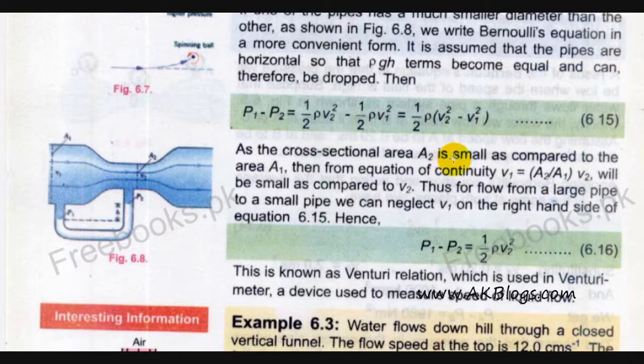As a cross sectional area A2 is small as compared to the area A1, then from the equation of continuity, which we know as A1 v1 equals A2 v2, we have taken the relation v1 equals A2 over A1 into v2.